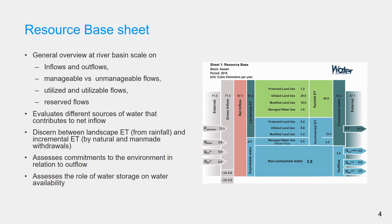If we remember from Unit 2, the purpose of the resource base sheet is to provide a general overview at a river basin scale on the inflows and outflows, manageable and unmanageable flows, utilized and utilizable flows. It also evaluates the different sources of water that contribute to net inflow, distinguishes between landscape evapotranspiration and incremental evapotranspiration by natural and man-made withdrawals, and helps us understand the role of water storage on water availability.